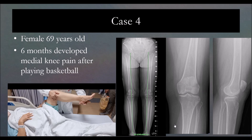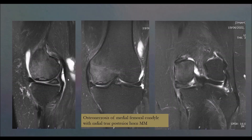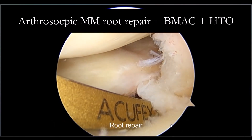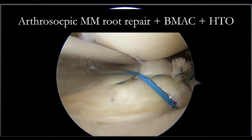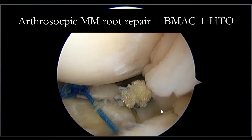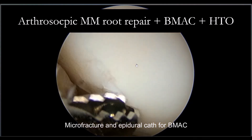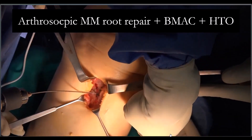Next case: a basketball player with medial joint line pain and osteonecrosis. When you have osteonecrosis, always look for a meniscal root tear — the association is about 80%. She had a meniscal root tear. I made drill holes using a technique I published for root repair. Once that was done, I made a good microfracture and also injected into the joint, and then performed TTO as well, following the axis.